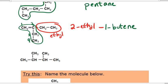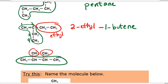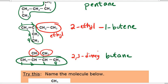Next example: the longest chain would be this one, and there are two methyl substituents. Let's number the chain. In this case, it doesn't matter which side we number from — there's no functional group and the substituents are symmetric. So one, two, three, four. The root and ending would be 'butane.' We don't need a number in front because there's no functional group. Then we do the substituents: we have two methyl groups, one at two, one at three. So it's 2,3-dimethylbutane. We don't need a dash between 'dimethyl' and 'butane' because there's no number there — dashes only go between numbers and letters.